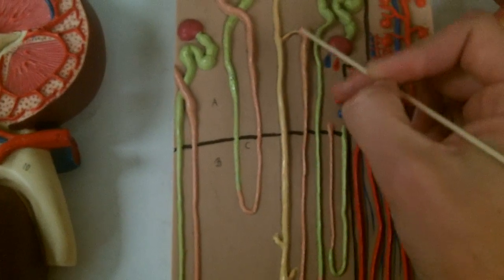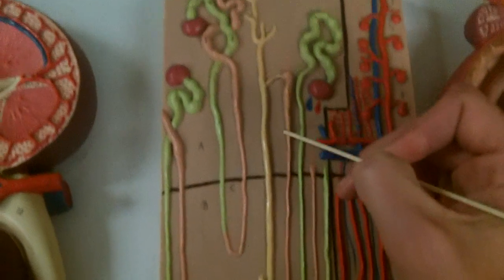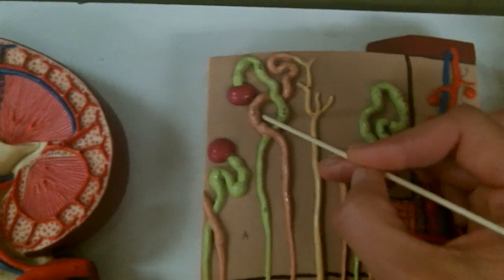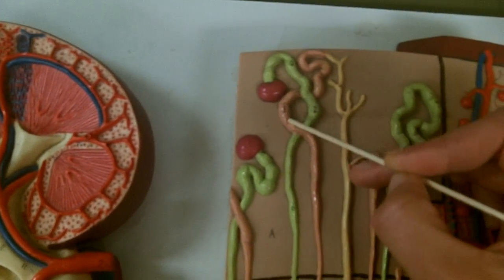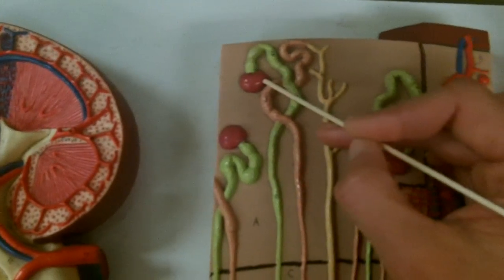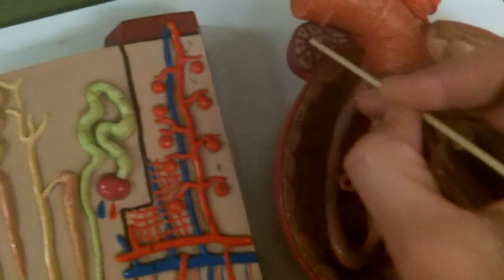Then coming up here this is going to be the distal convoluted tubule. Now this one right here actually shows us the early distal convoluted tubule and I know that because it's a functional contact with the glomerulus where those macula densa cells would be.